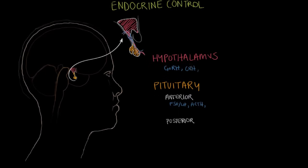The hypothalamus also releases thyroid-releasing hormone, or TRH. Thyroid-releasing hormone goes down to the anterior pituitary and stimulates the anterior pituitary's release of thyroid-stimulating hormone, TSH. Thyroid-stimulating hormone goes down and stimulates the thyroid gland to release its hormones, thyroxine and triiodothyronine.